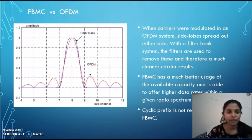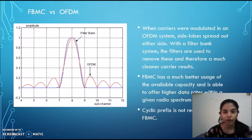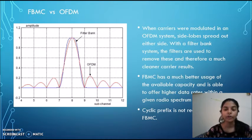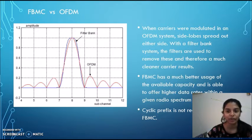Here we see the difference between FBMC and OFDM. When the carriers are modulated in an OFDM system, side lobes spread out either side. With the filter bank system, the filters are used to remove these, and therefore a much cleaner carrier results. FBMC also has much better usage of the available capacity and is able to offer higher data rates within a given radio spectrum. Cyclic prefix is also not required in FBMC.